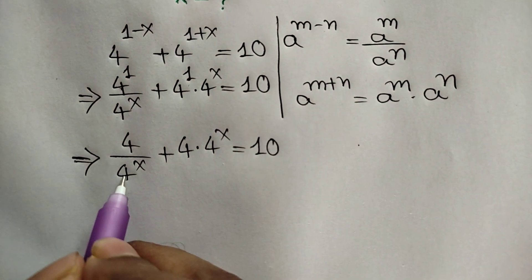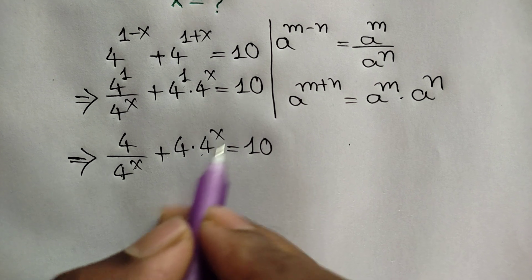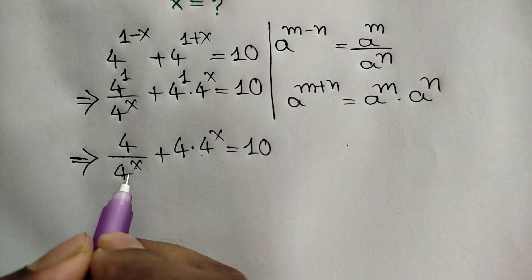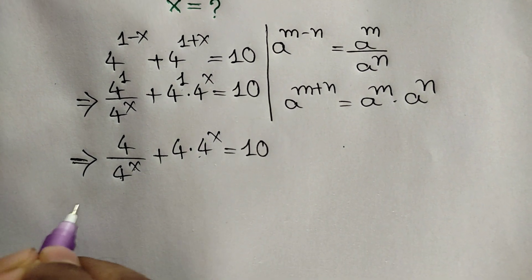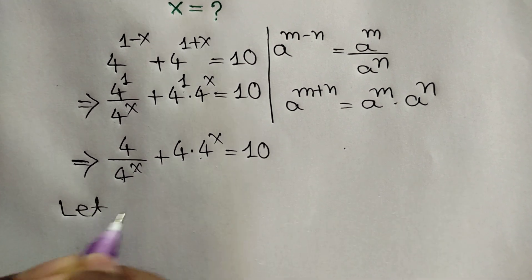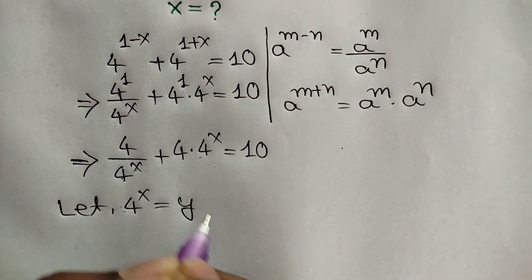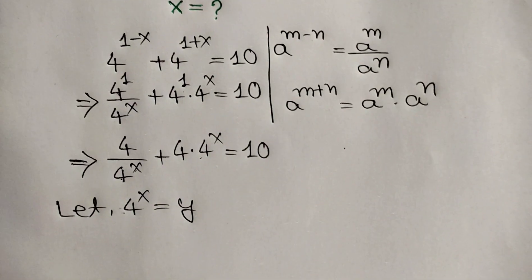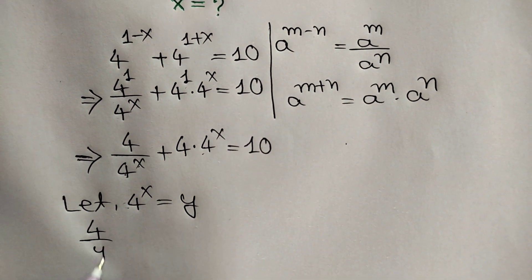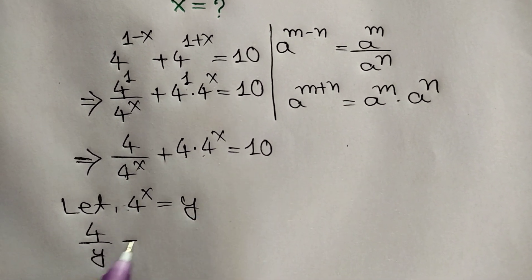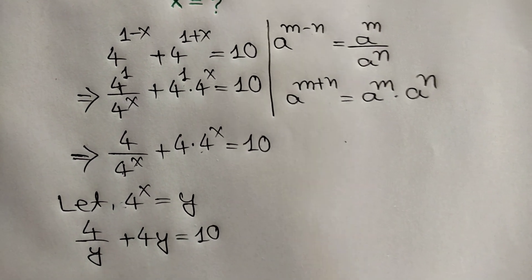Now, attention here — this 4^x and this 4^x, both terms are the same. So 4^x is substituted by y. Let 4^x equal y. So our equation will be 4 over y plus 4y is equal to 10.